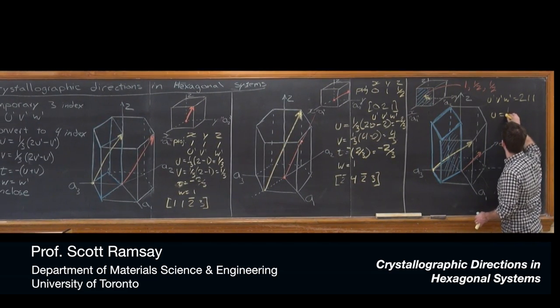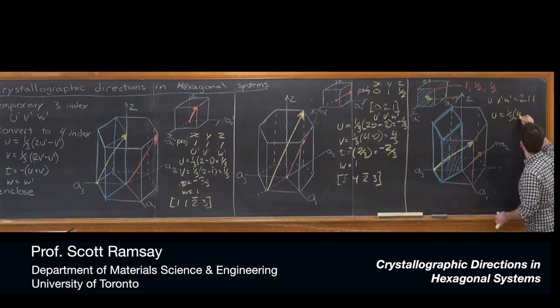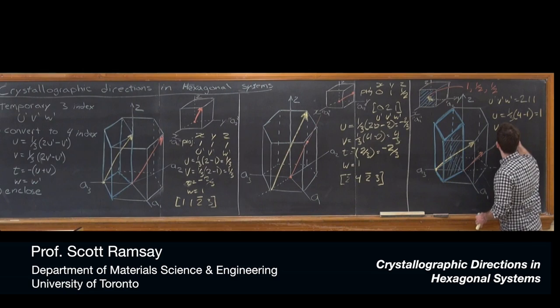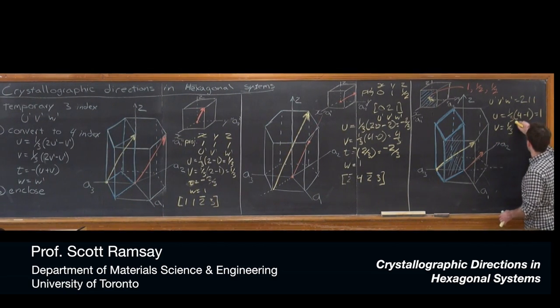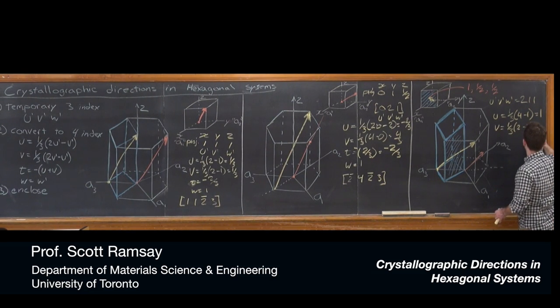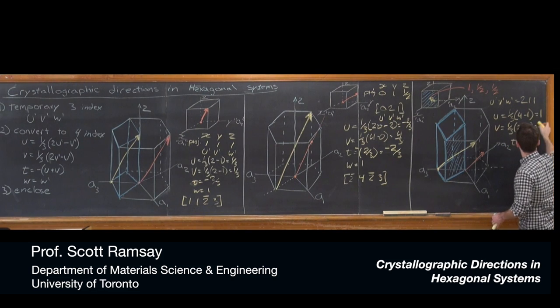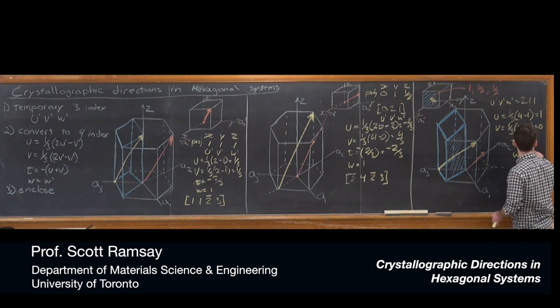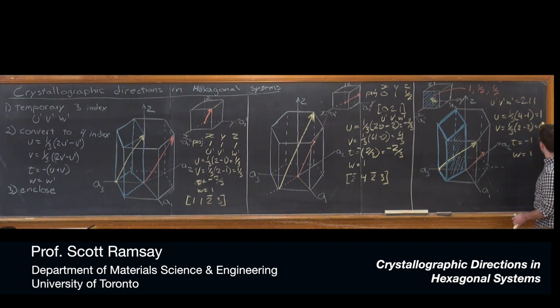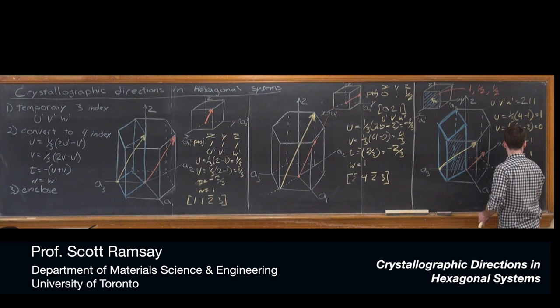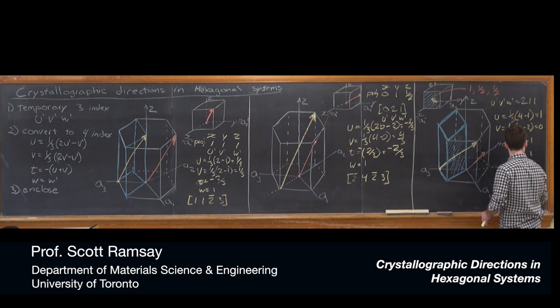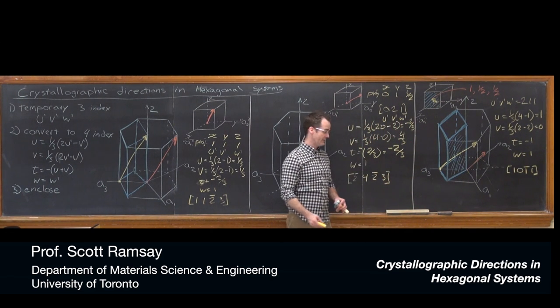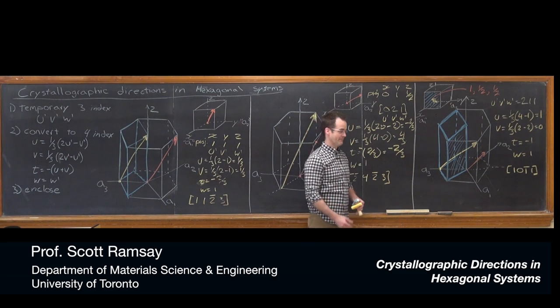Therefore our U prime, V prime, and W prime equals these values. We're going to get rid of that pesky fraction, so it's going to be 2, 1, 1 multiplied by 2. Then we proceed to our U, V, T, and W four-index system. U is 1/3 times (2×2-1) equals 3/3 which is 1. V is 1/3 of (2×1-2) equals 0. T is negative (1+0) which is -1. W is just W prime which is 1. So our indices are 1, 0, -1, 1. That's [1,0,1̄,1], the indices for that vector in the four-index system. That was a challenging one. That was hard. But I hope it helped.